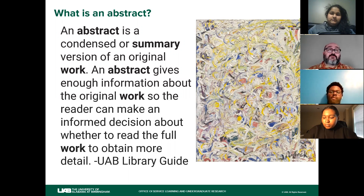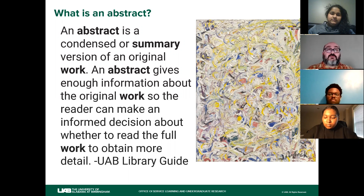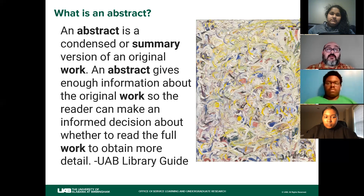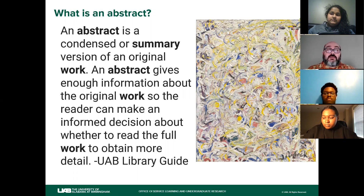This definition comes directly from the UAB Library Guide. An abstract is a condensed or summary version of an original work. It gives you enough information about the original work so that the reader can make an informed decision about whether they want to read the whole work to obtain more detail. I compare it to the trailer for a film — it's going to pull you in and give you the basic information. Most abstracts are 300 words or less. If you're submitting to the expo, they're 250 words or less, so you have to be concise and precise.